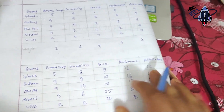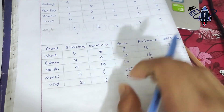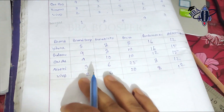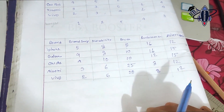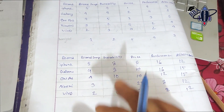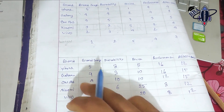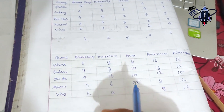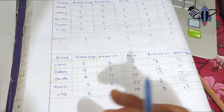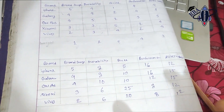This is a way to draw a perceptual map. After calculating the weighted scores, we have to draw a perceptual map to visually represent the brand positions.